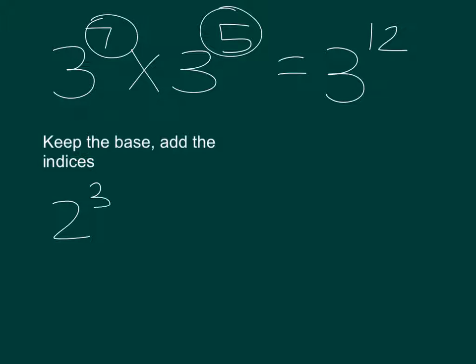If we've got 2 to the power of 3, times by 3 to the power of 5, times by 2 to the power of 4, times by 3 to the power of 6, I'm going to put the equal sign over here.